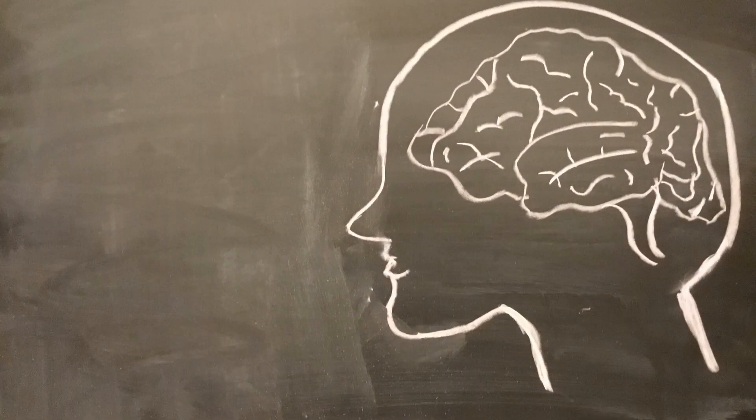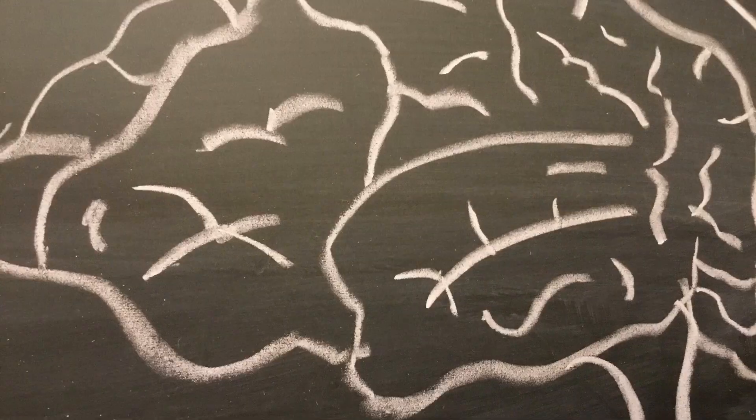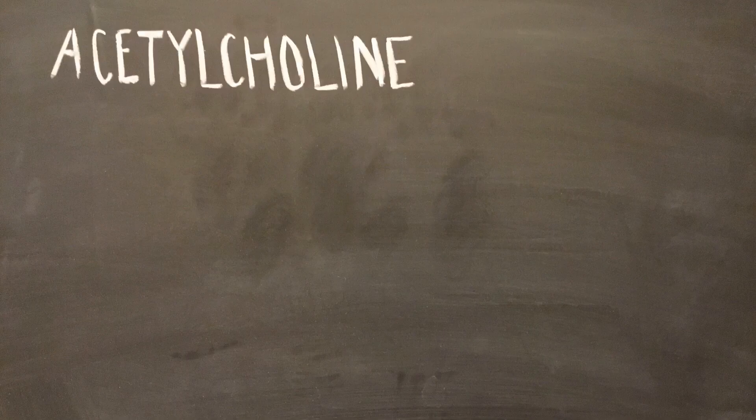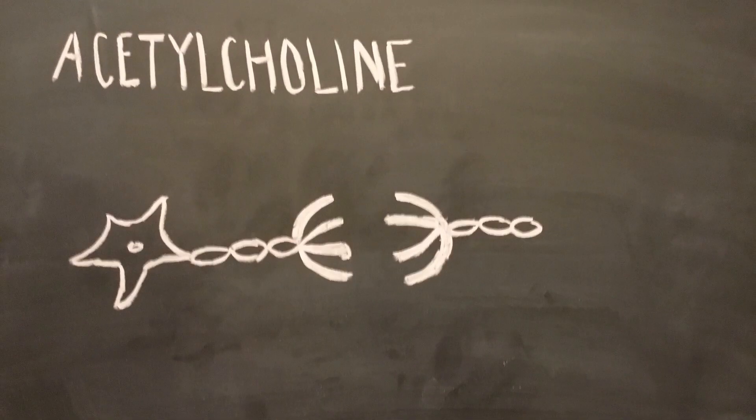To continue, we must understand what acetylcholine actually is. Acetylcholine is a chemical located in the synapse at the end of a neuron where there is a small gap between the nerve cells.